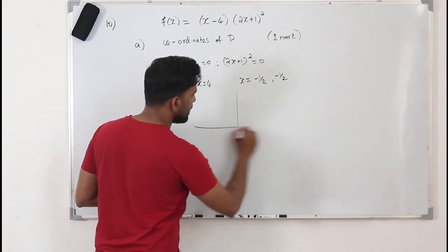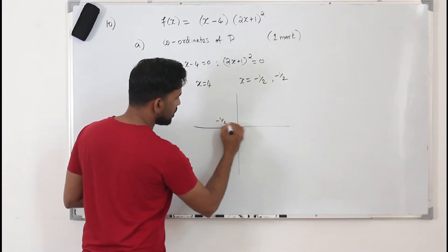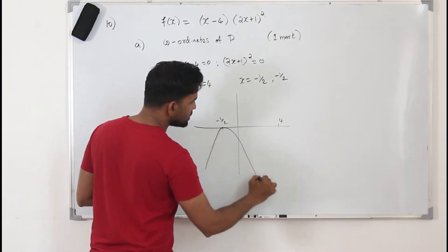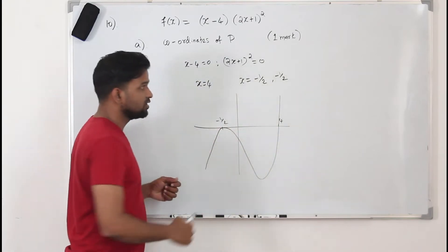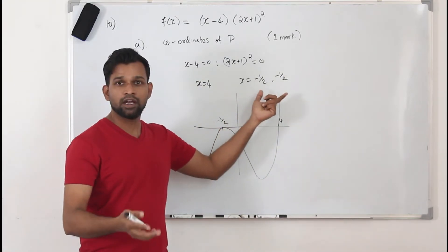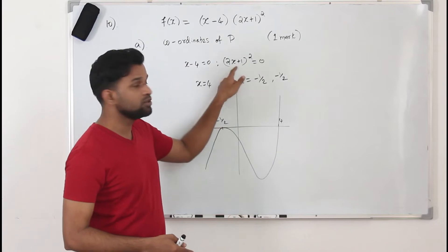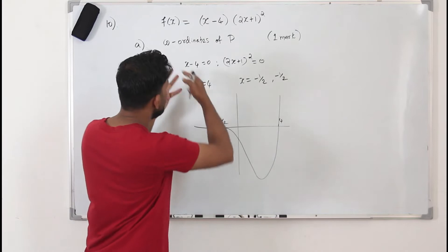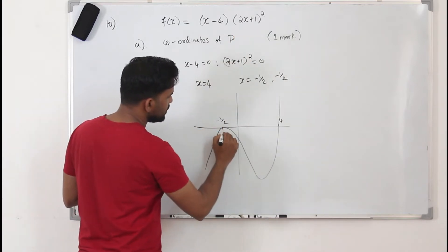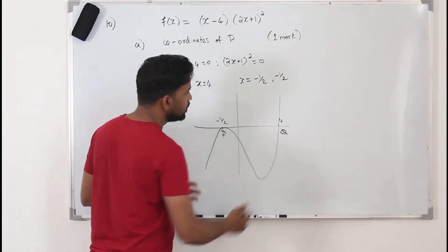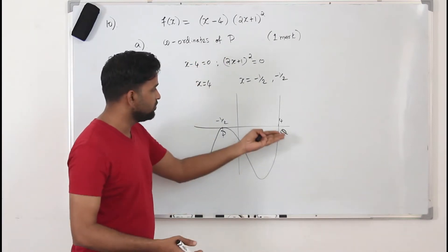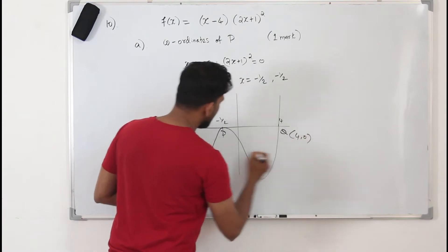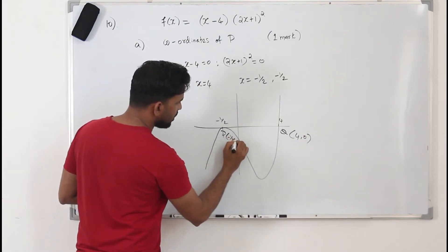When you sketch the graph, if the solutions are minus half and 4, the graph will touch the x-axis at minus half because we have two equal values of minus half when you solve this. So it will touch the x-axis here. In the question, this touching point is P and the crossing point is Q. So Q is (4, 0) and P is (−1/2, 0).